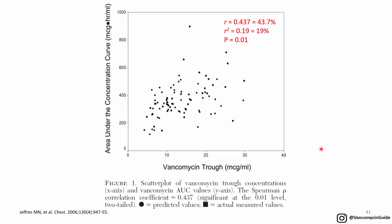Now let's see the correlation between trough and AUC. The 2009 and 2011 guidelines said you can use trough as a surrogate for AUC because we know AUC is the PKPD target for efficacy — AUC actually determines efficacy. Trough really doesn't mean anything for efficacy; trough is only meaningful for safety, which we'll talk about in a bit. So they were using trough as a surrogate for AUC, which is the actual parameter for efficacy, and they said that's because there's a significant correlation between trough and AUC.